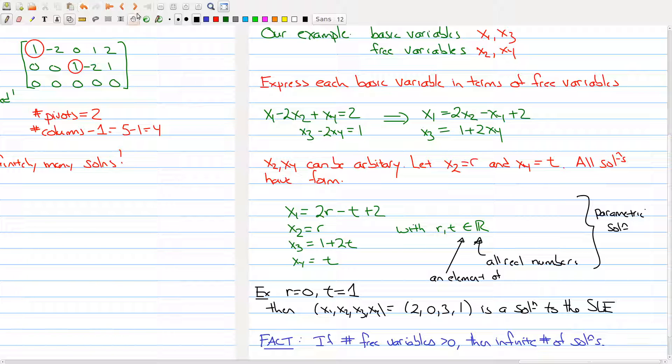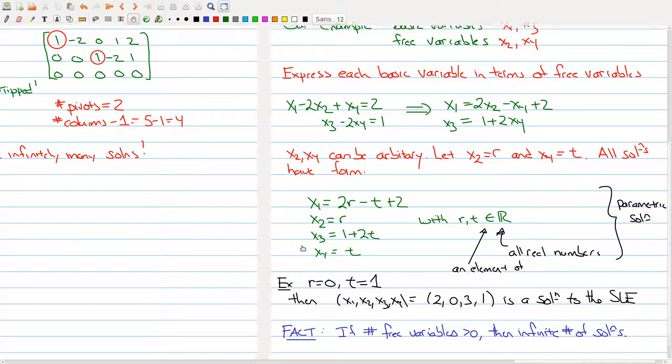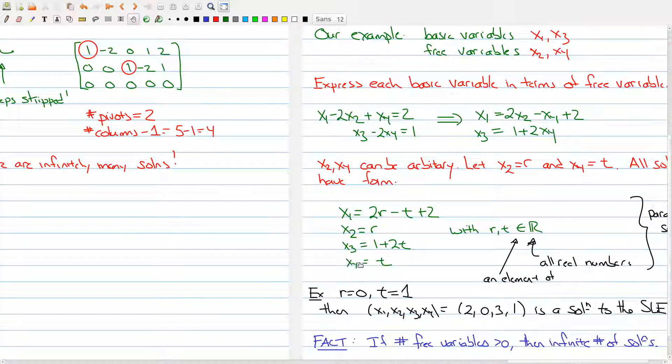And one takeaway here is that if the number of free variables is greater than zero, is positive, then you have to have an infinite number of solutions. So the number of free variables in your system of linear equations tells you whether you have an infinite number of solutions.